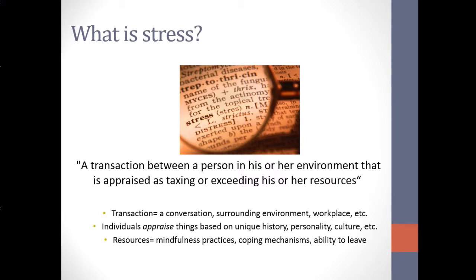Something happens, and the next thing we as human beings do is appraise that thing. Another word for appraise is judge. We do this all the time — is this good? Is this bad? Do I like this? Everyone judges or appraises things differently based on personality, culture, and past experiences. Then we determine: do we have the resources to deal with this thing? Resources means our skills or tools that we use to cope — for example, taking three deep breaths or leaving a stressful situation. So if we determine that something happens and we judge it to exceed our resources, that is stress.